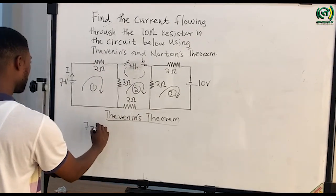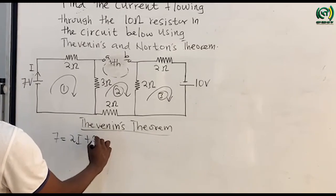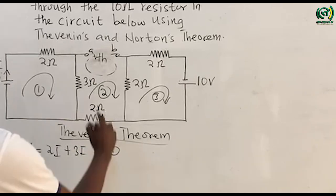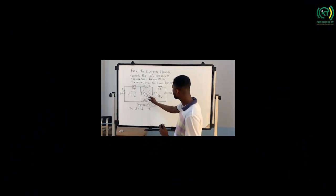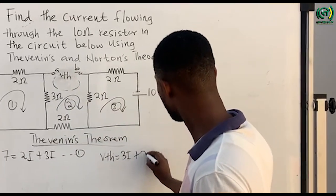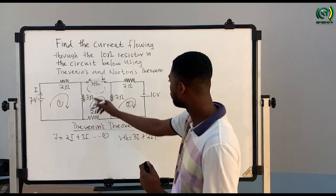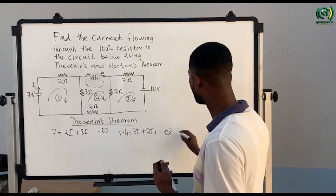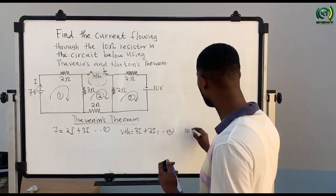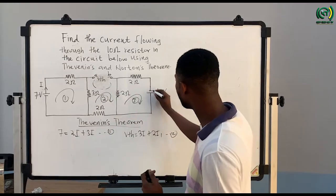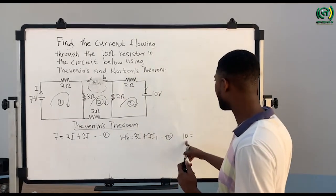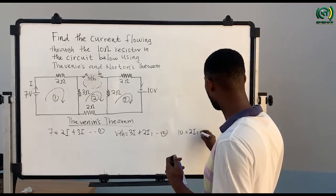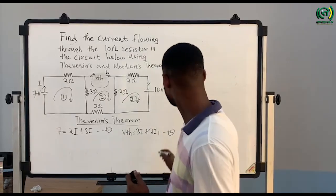For loop one we have: 7 = 2I + 3I. For loop two: Vth = 3I + 2I₁. For loop three, the 10 volt source drives a current I₁, so we have: 10 = 2I₁ + 2I₁. Simplifying these loops — for loop one: 7 = 5I, so I = 7/5. For loop three: 10 = 4I₁, so I₁ = 10/4.